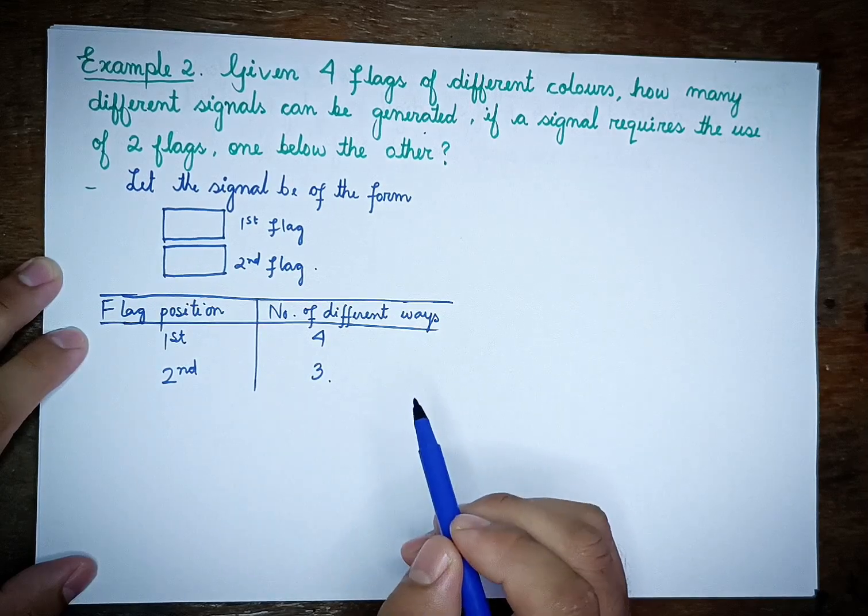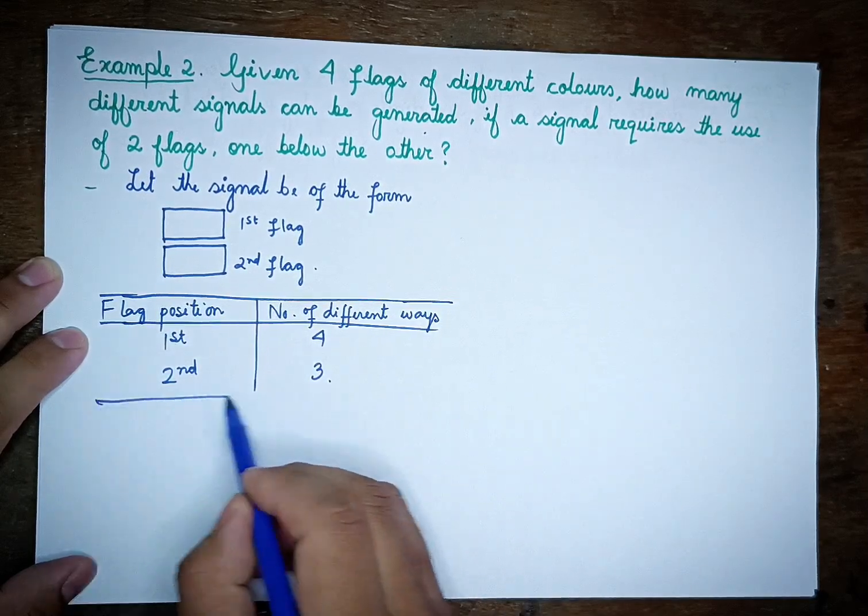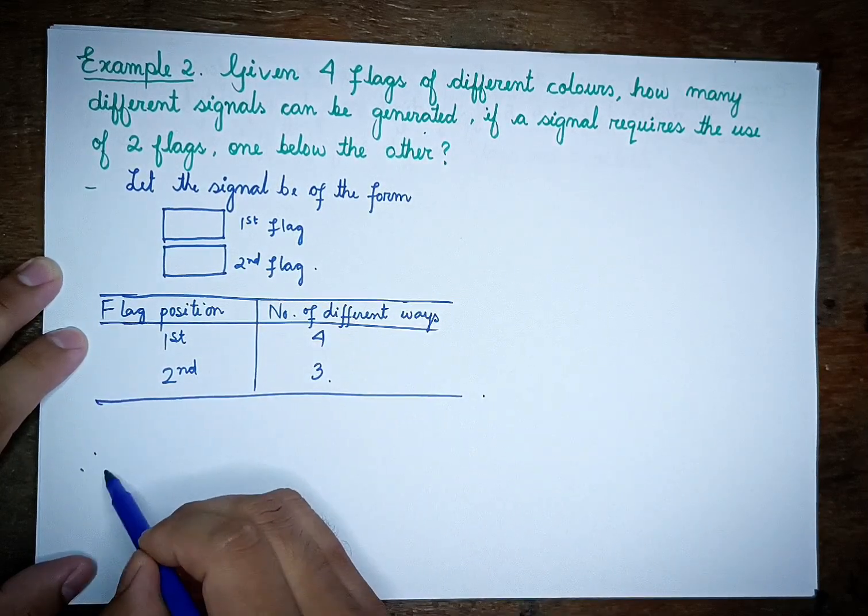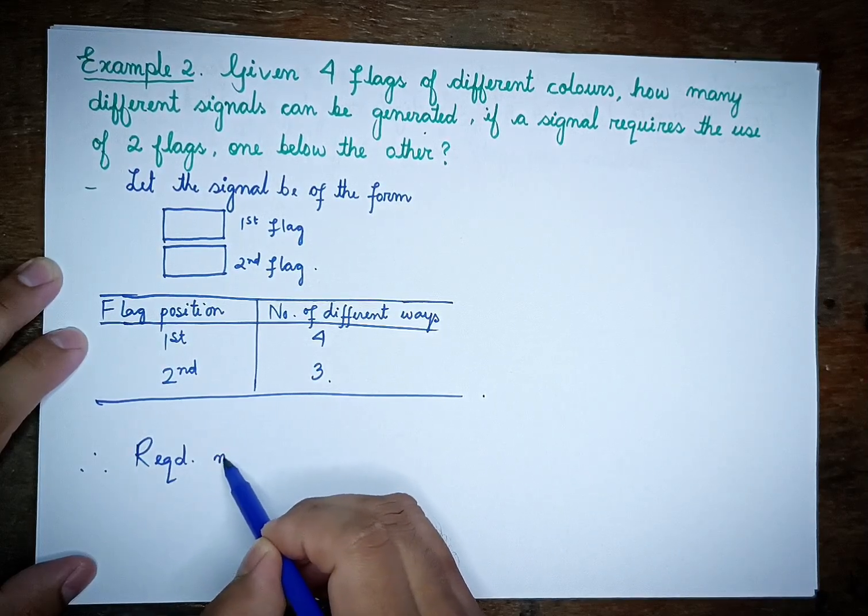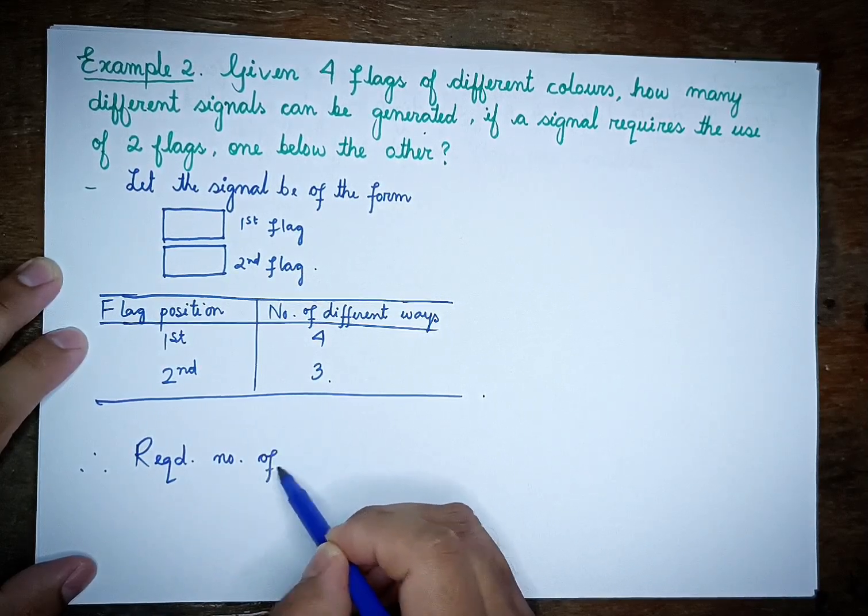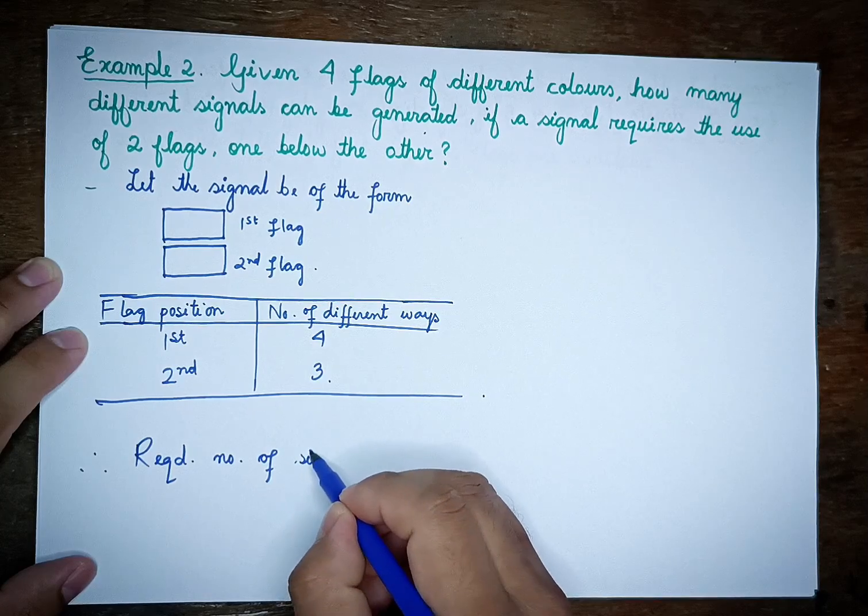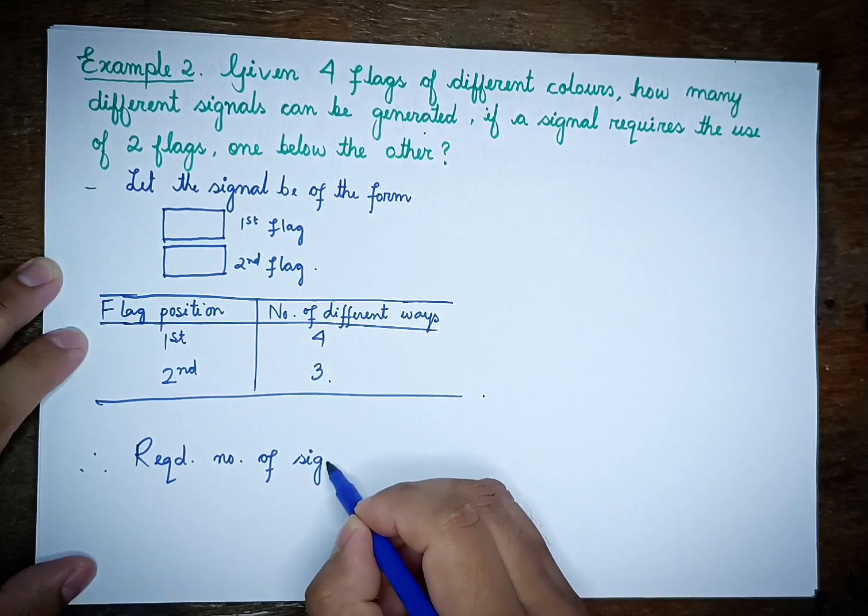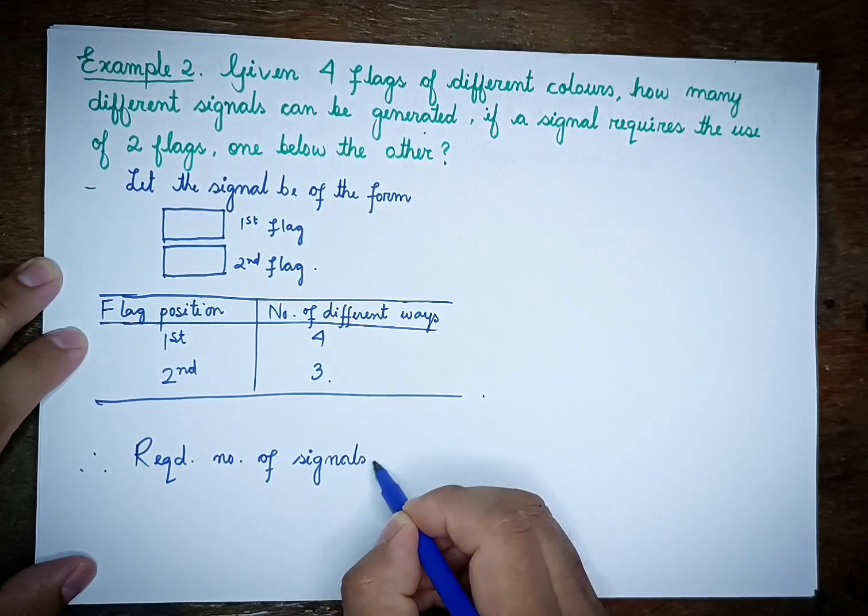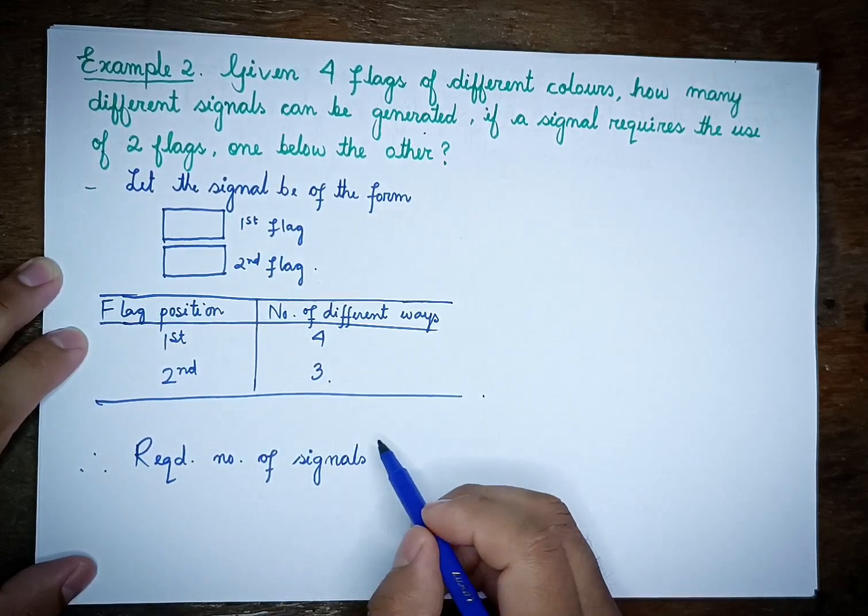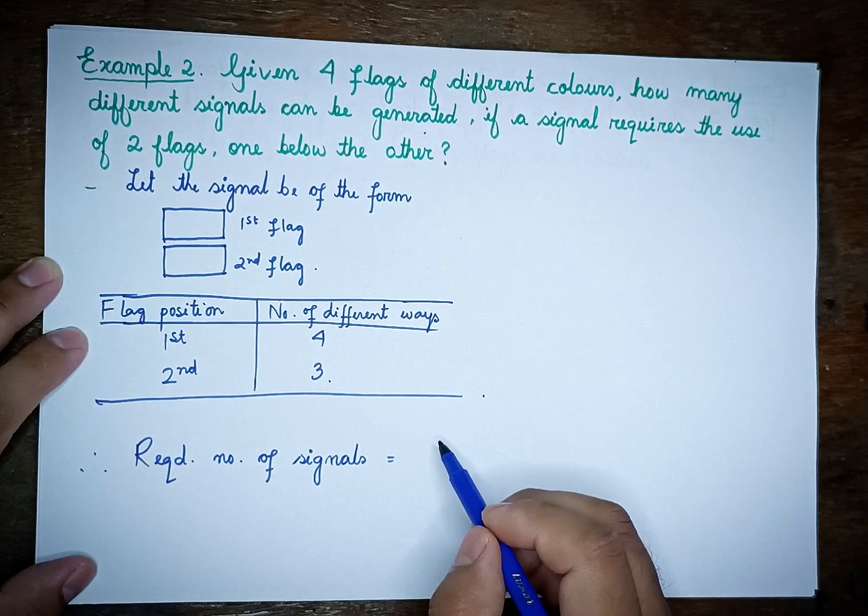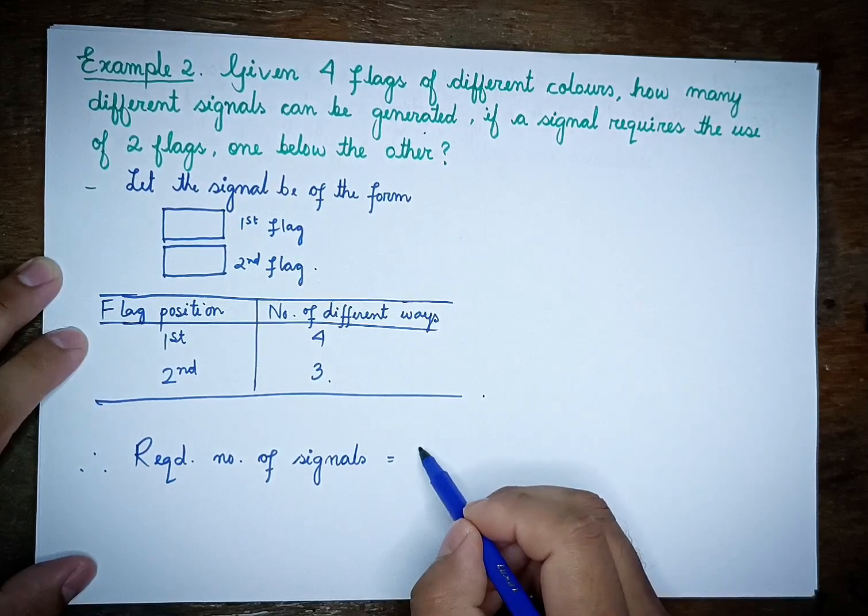The required number of signals - using the principle of counting, the total number of arrangements is found by multiplying: 4 ways for the first position times 3 ways for the second position.